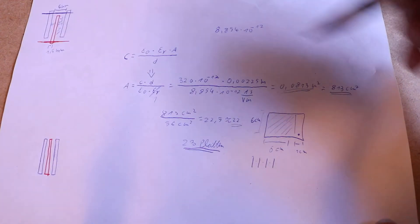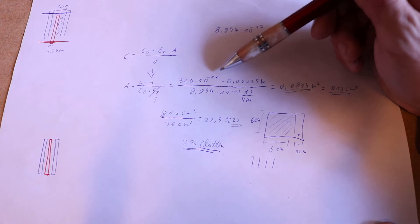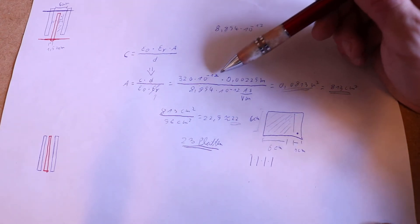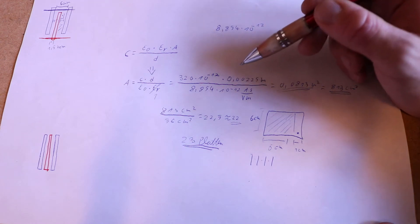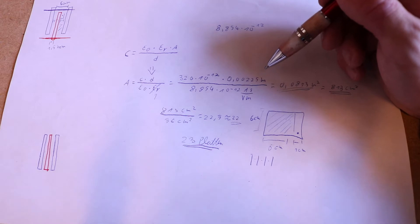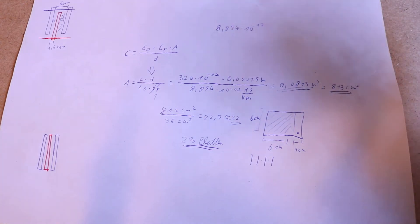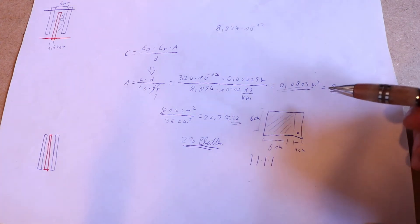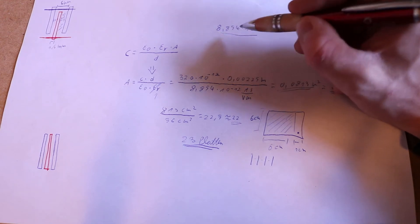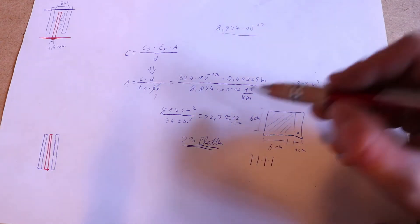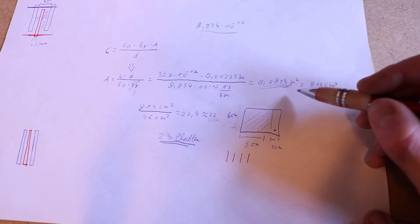That leaves us with the rest of the formula, and I just put in the numbers. This is the value I said: 320 picofarads. Pico is 10 to the power of minus 12. Then the thickness between the plates is approximately 2 millimeters—0.00225 meters. All of that is divided by the electric field constant, 8.854 times 10 to the power of minus 12, and this gives us 0.0813 meters squared, which is 813 centimeters squared.